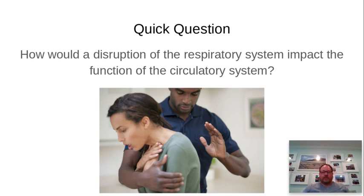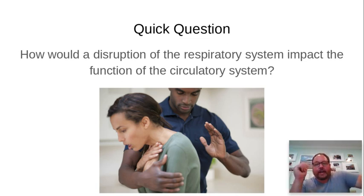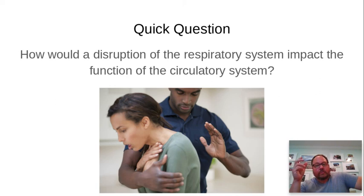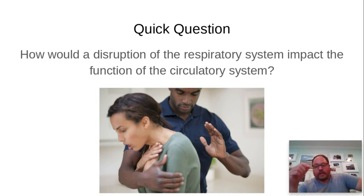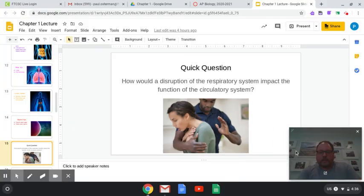Here's a quick question to end this section: if you disrupt the respiratory system, what impact would that have on the function of the circulatory system? Please take a moment to ponder. Thinking about these interactions between systems is going to be the main task of a paper you'll write next week over the body systems. The big idea here is to recognize that one system has impacts on other systems — they're all interrelated.